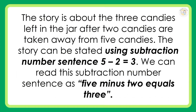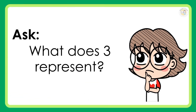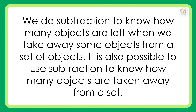The story is about the 3 candies left in the jar after 2 candies are taken away from 5 candies. The story can be stated using a subtraction number sentence: 5 minus 2 is equal to 3. We can read this subtraction number sentence as '5 minus 2 equals 3.' What does 5 represent? What does 3 represent? We do subtraction to know how many objects are left when we take away some objects from a set of objects.